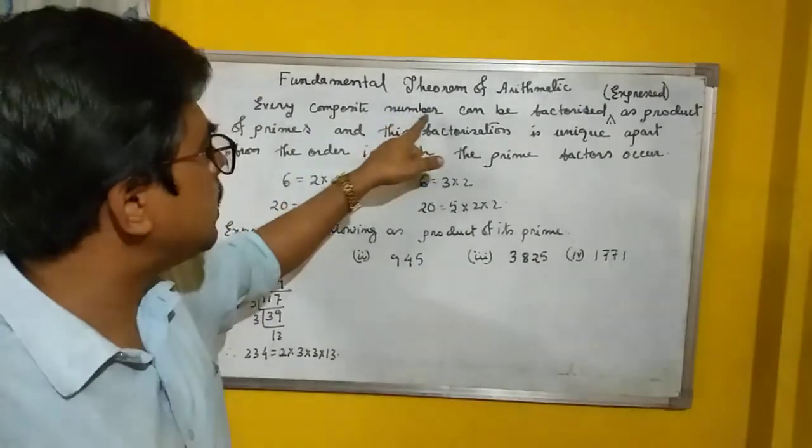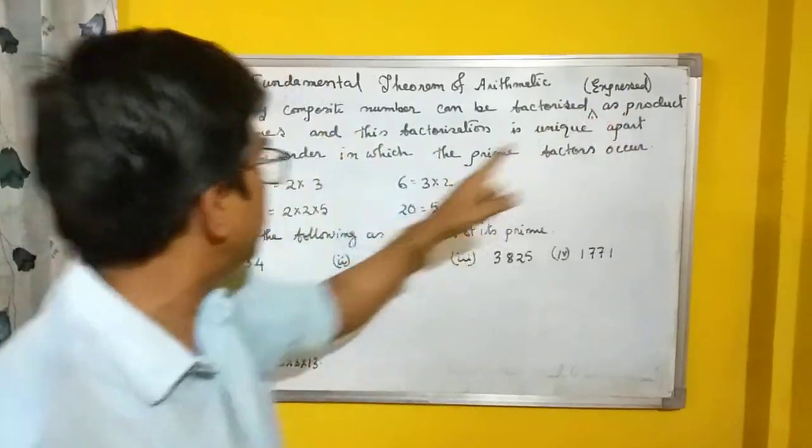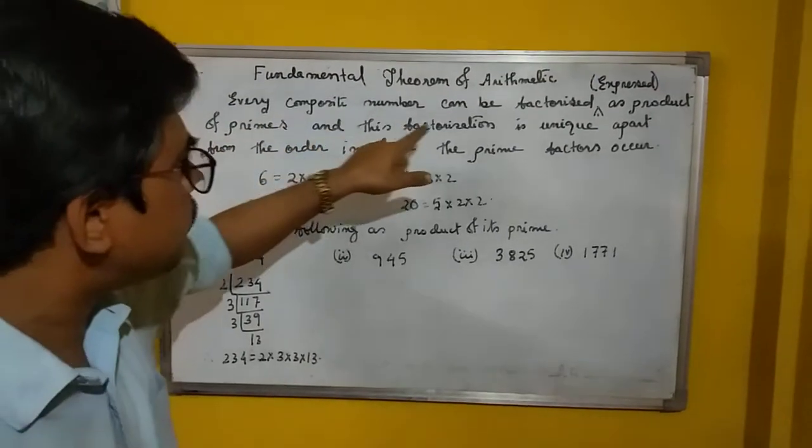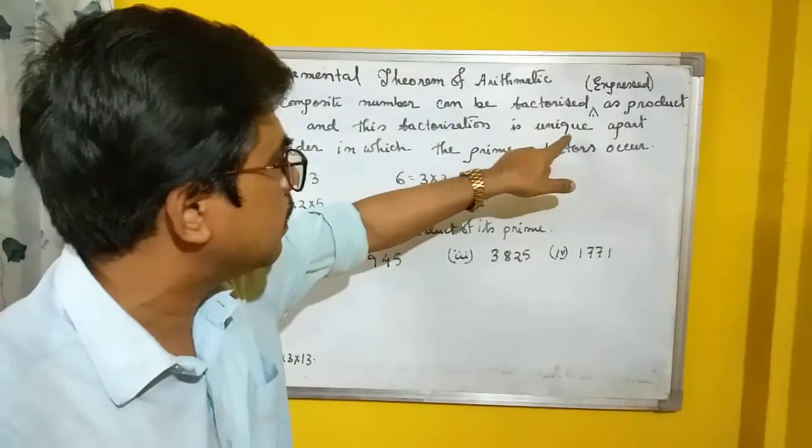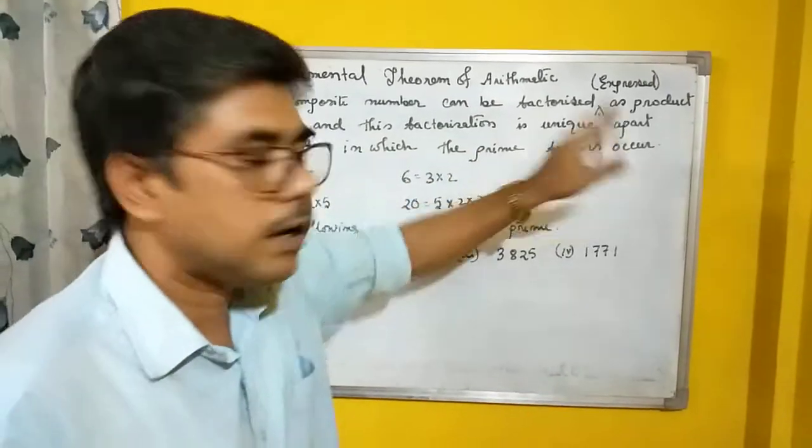So every composite number can be factorized or expressed as a product of primes, and this factorization is unique apart from the order in which the prime factors occur.